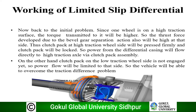To summarize the LSD working: the left wheel is on higher traction and the right wheel is on lower traction. The torque transmitted to the left wheel is high, so thrust force from bevel gear separation action is also high on that side. The clutch pack on the high-traction side is pressed firmly and locked, so power flows directly from the differential casing to the high-traction axle. The clutch pack on the low-traction side is not engaged, limiting power flow to that side. The vehicle overcomes the traction difference, and torque is divided as per requirement.